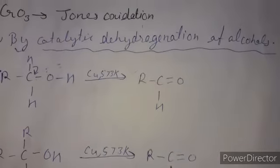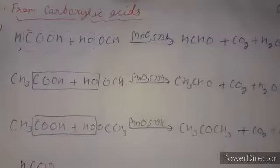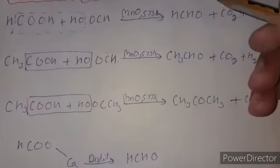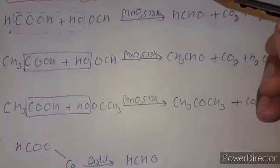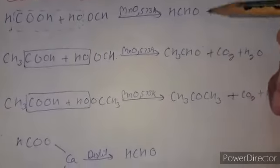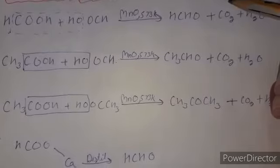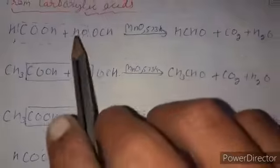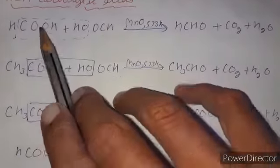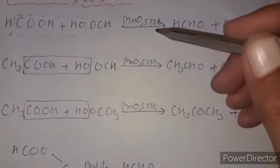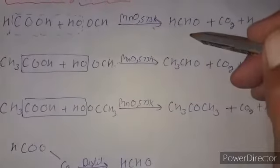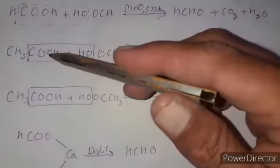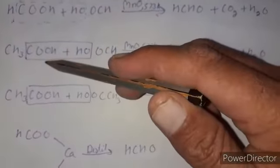Next, we prepare aldehydes and ketones from carboxylic acids. When two molecules of methanoic acid are reacted in the presence of manganese oxide at 573 K as a catalyst, we obtain formaldehyde as a product along with carbon dioxide and water.